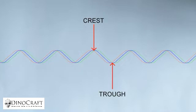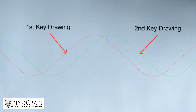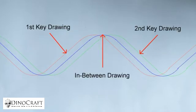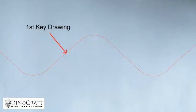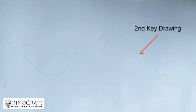Please take note that whenever I show you two key drawings and an in-between or breakdown, the first key drawing will be in red, the second key drawing will be in green, and the in-between or breakdown will be in blue.